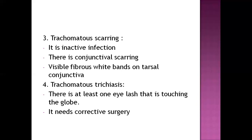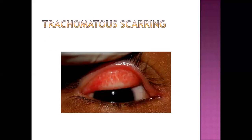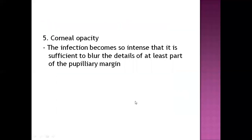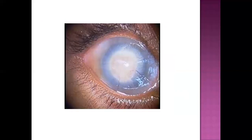In trachomatous trichiasis, at least one eyelash is touching the globe — that is, touching the inner part of the eye. When it reaches the trichiasis phase, corrective surgery is required, as non-pharmacological or medical treatment alone is not sufficient. Corneal opacity is blurring of vision that occurs when the infection becomes so intense that it blurs the pupillary margin area.